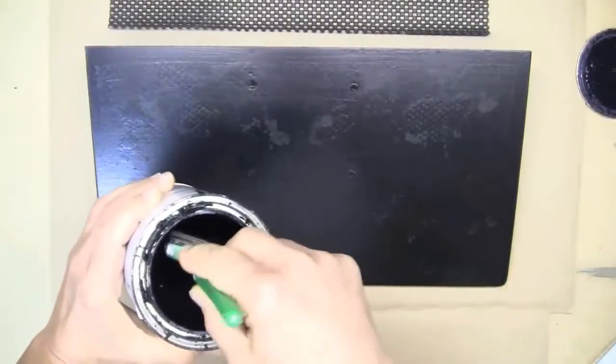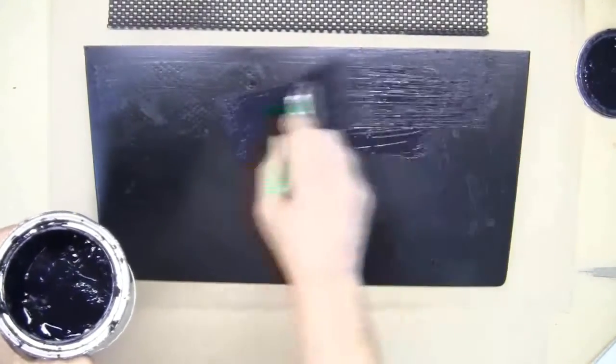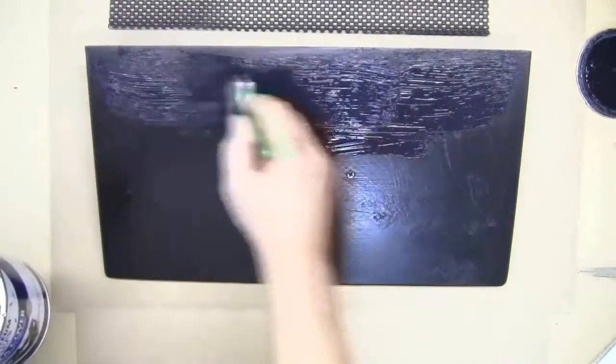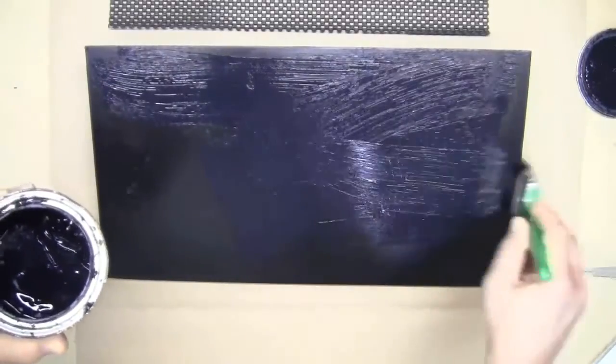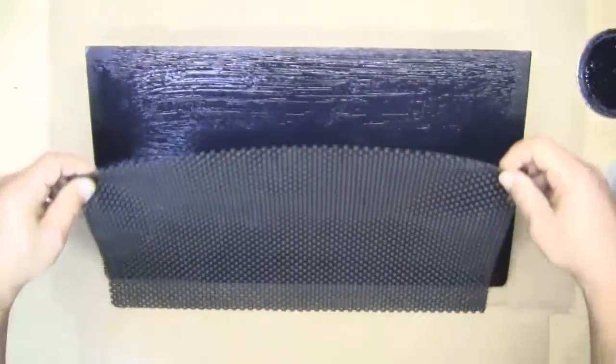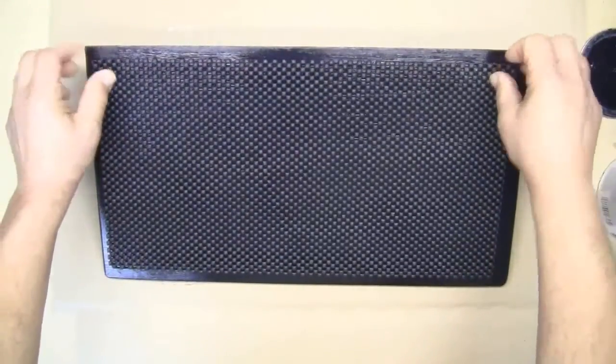So the way to do this is you just take some paint and you slap it on the surface. Make it reasonably thick because you're going to use it sort of as an adhesive. I'm just going to take the cover, put it on here just like this.